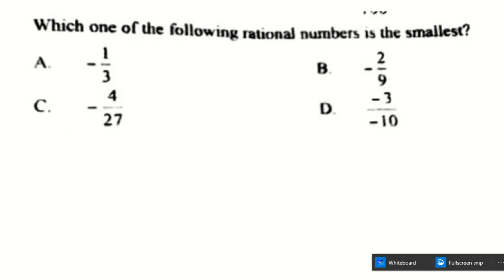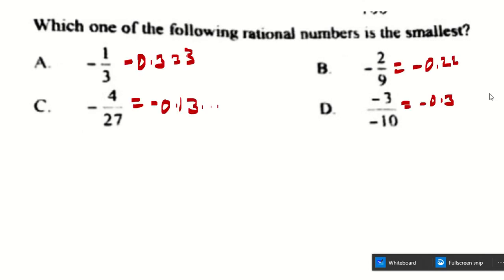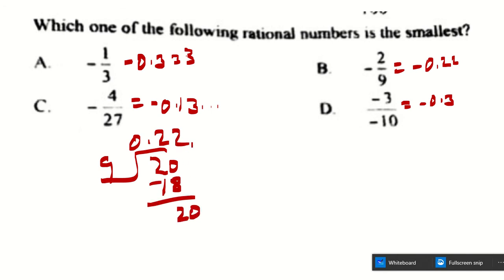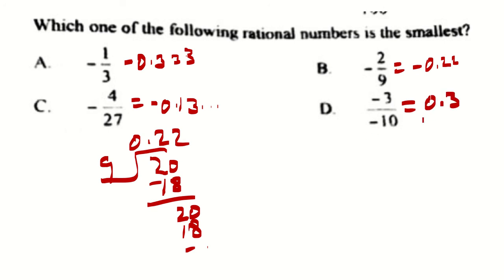The next question asks which rational number is the smallest. We convert each to decimal: negative 1 over 3 is approximately negative 0.333 repeating; negative 2 over 9 is approximately negative 0.222 repeating; negative 3 over 10 divided gives negative 0.3. Option D has two negatives that cancel, making it positive, so it is the largest, not the smallest.